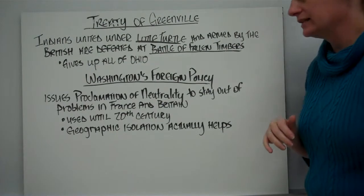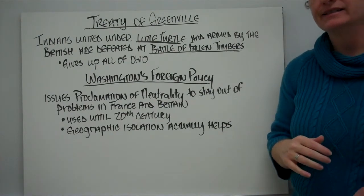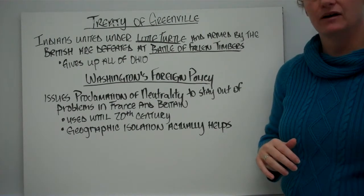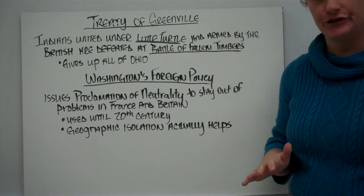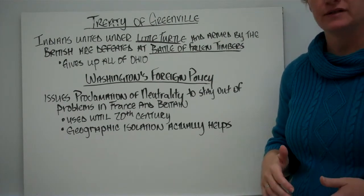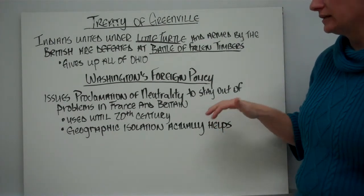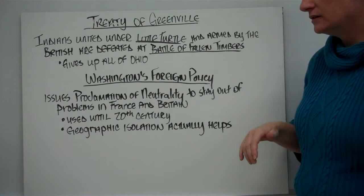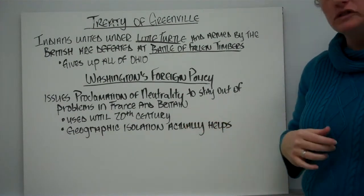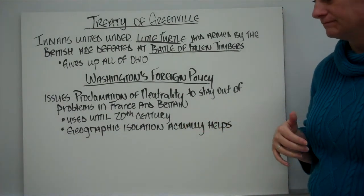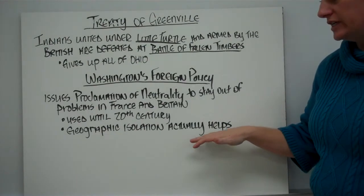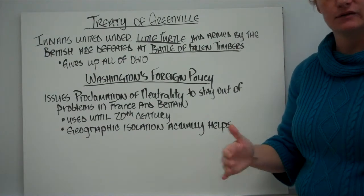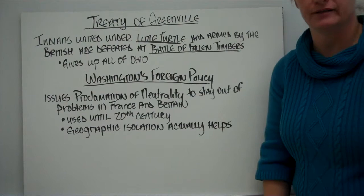As Washington developed foreign policy, he recognized that as a new nation, the United States was not fully ready to take on outside issues. He felt the country needed to focus on itself, and so he issued the Proclamation of Neutrality to stay out of problems between France and Britain. It was so successful it was used until the 20th century. Geographic isolation actually helped, since an entire ocean separated the U.S. from Europe.